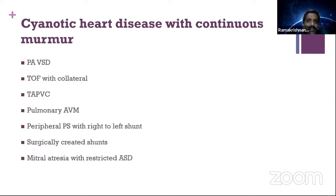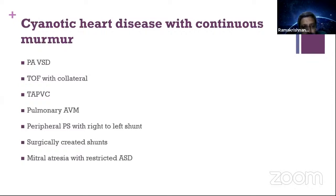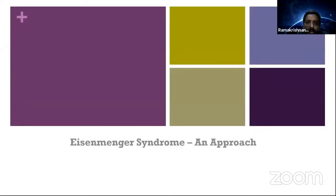What are the causes of continuous murmur in CCHD? Pulmonary atresia with VSD, TOF with aortopulmonary collaterals, TAPVC (you can hear something like a venous hum), pulmonary arteriovenous malformations can rarely produce peripheral continuous murmur, peripheral PS with right-to-left shunt, a surgically created shunt, or rarely mitral atresia with restrictive ASD — where you can have a continuous murmur at the ASD site.